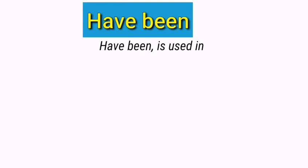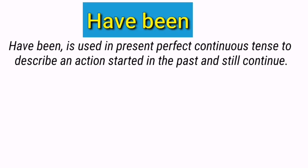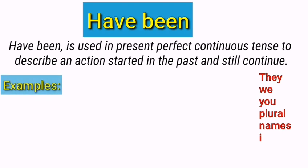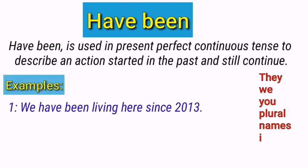'Have been' is used in present perfect continuous tense to describe an action started in the past and still continuing. It is used only with these subjects: they, we, plural names, and I. For example: We have been living here since 2013. 'Have been' is used with the subject 'we,' and it is present perfect continuous tense because it talks about an activity — living — which started in 2013 and still continues.